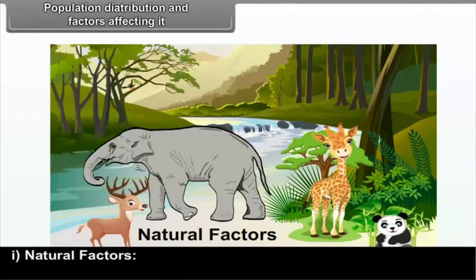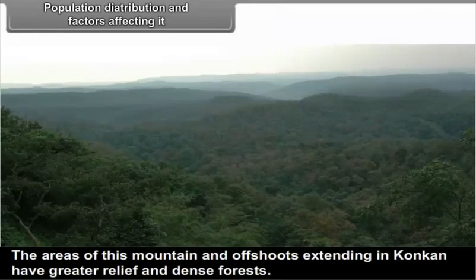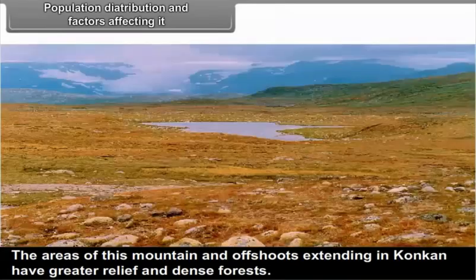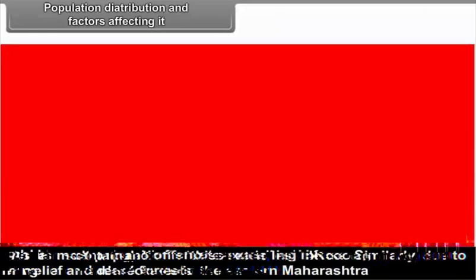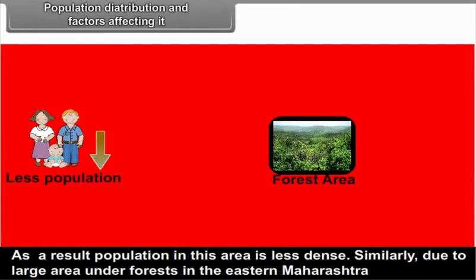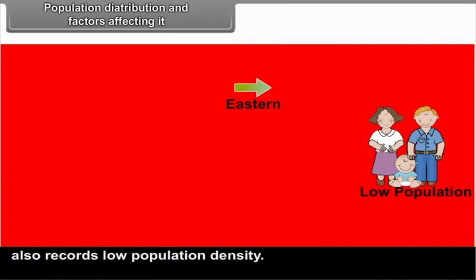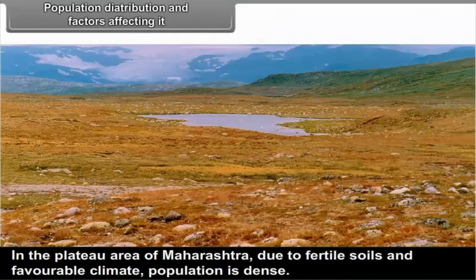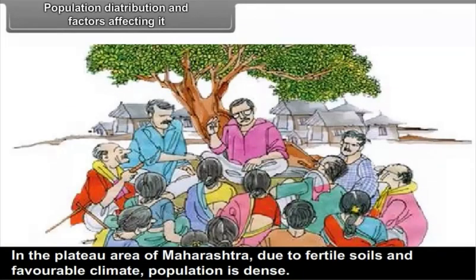Natural factors: The western part of Maharashtra has the Sahyadri mountains extending in the north-south direction. Areas of this mountain and its offshoots in Konkan have greater relief and dense forests, resulting in less dense population. Similarly, large forested areas in eastern Maharashtra record low population density. In the plateau area of Maharashtra, fertile soils and favorable climate result in dense population.